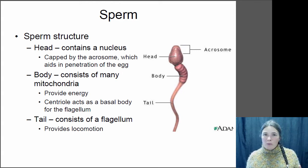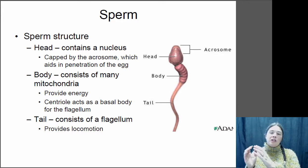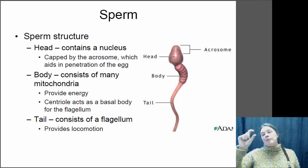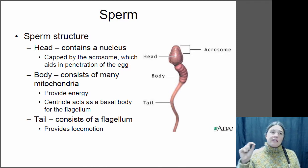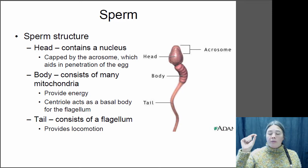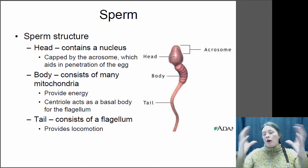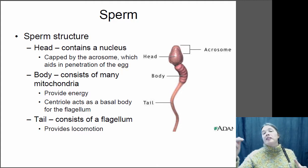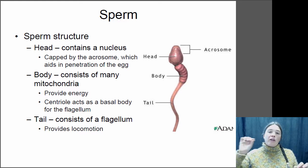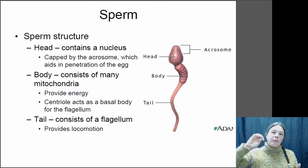Most sperm have a very similar structure, made up of three different components. You have the head region — that's where the nucleus is, where the genetic information is contained. At the tip of the head region is the acrosome. The acrosome generally contains compounds that assist the sperm in penetrating the outer layer of the egg. Eggs have defensive mechanisms that prevent sperm that are not of the same species from penetrating the outer layer, so the acrosome has species-specific compounds.